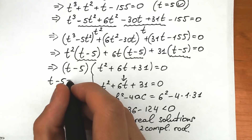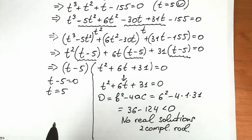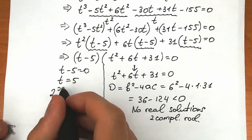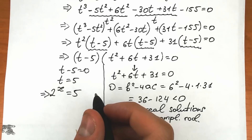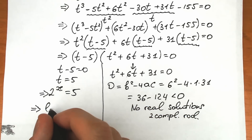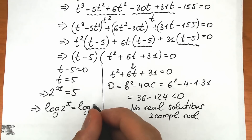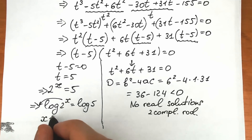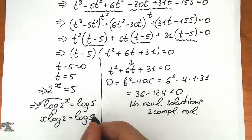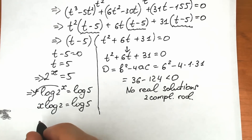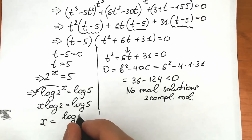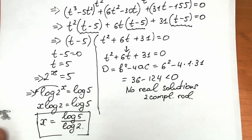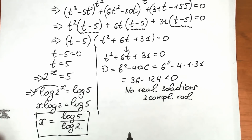From t minus 5 equals zero, we get t equals 5. Substituting back using 2 to the x equals t, we have 2 to the x equals 5. Applying log to both sides: log(2 to the x) equals log 5, and x comes down to give x times log 2 equals log 5. Dividing both sides by log 2, we get x equals log 5 over log 2. This is our solution, and it can also be rewritten using log properties.